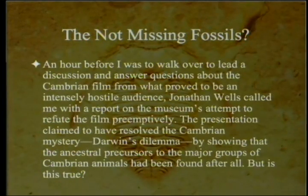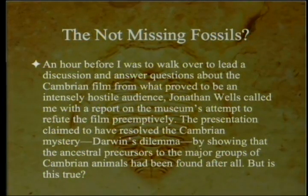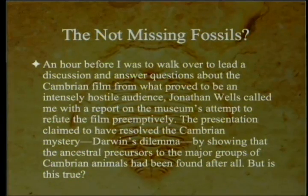An hour before Meyer was to lead a discussion following the Cambrian films, Jonathan Wells called him with a report on the museum's attempt to refute the film preemptively. The presentation claimed to have resolved the Cambrian mystery — Darwin's dilemma — by showing that the ancestral precursors to the major groups of Cambrian animals had been found after all. But Meyer asks: is this true?